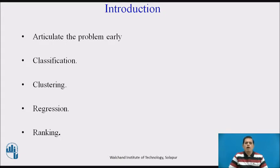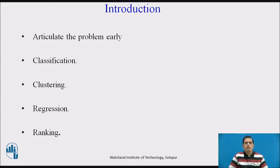The first parameter is articulate the problem early. Knowing what you want to predict will help you decide which data may be more valuable to collect. When formulating the problem, conduct the data exploration and try to think in the categories of classification, clustering, regression, and ranking that we already talked about in the previous videos. These are very important for the business application of machine learning and for the data analyst and data scientist to remember.